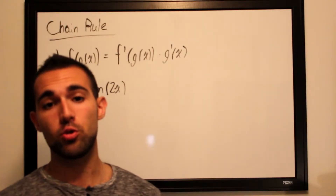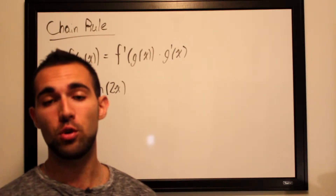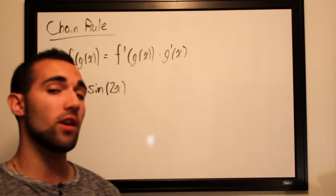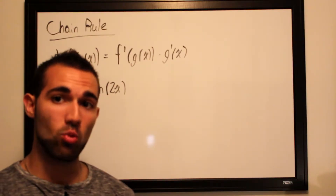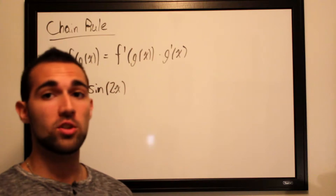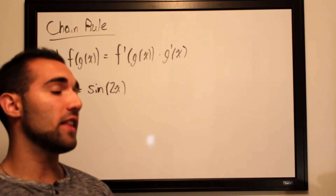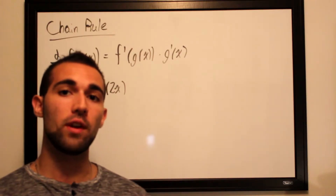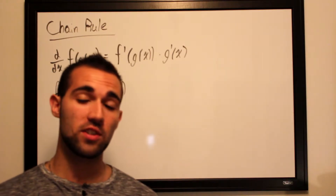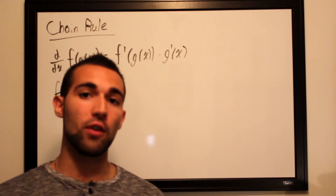In our previous video we learned to take the derivative of quotients of two functions using the quotient rule. Today we will be covering the last of our differentiation formulas, called the chain rule, which is used to take the derivative of composite functions — that is, a function which is trapped within another function.